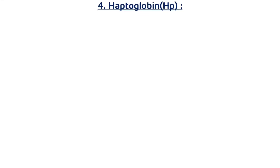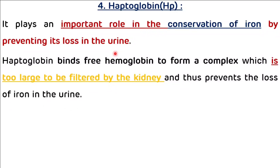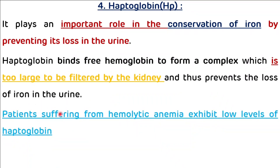Another alpha 2 globulin is haptoglobin. Haptoglobin plays an important role in the conservation of iron by preventing its loss in the urine. It binds free hemoglobin to form a complex that is too large to be filtered by the kidney, thus preventing the loss of iron in the urine. Patients suffering from hemolytic anemia exhibit low levels of haptoglobin.